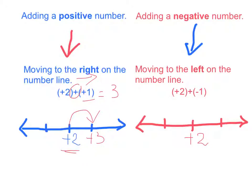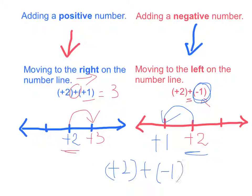Let's see this example. If I have positive 2 plus negative 1, similarly we start at positive 2. Because we are adding a negative number, we do the opposite — instead of moving to the right, we move to the left by one unit. Therefore, the result is positive 1. It means positive 2 plus negative 1 equals positive 1.